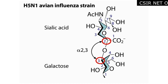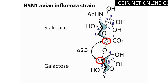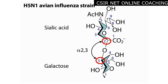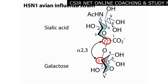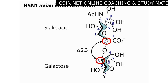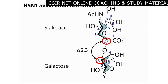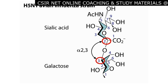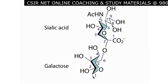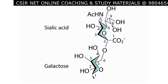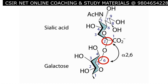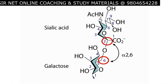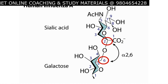The avian influenza strain H5N1 recognizes the alpha-2-3 linked version of the carbohydrate, which is found in birds. In humans, such carbohydrates are found only deep within the lungs, which may explain why the H5N1 strain, though deadly, is rarely transmitted between humans. In contrast, the upper respiratory tract of humans contains mainly alpha-2-6 linked receptors, and it is to these receptors that human influenza A virus binds.